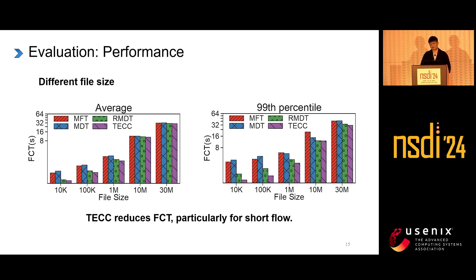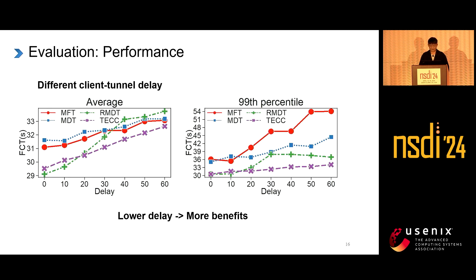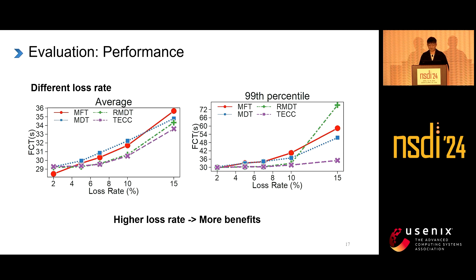With a 2% packet loss rate between client and tunnel server and files of different sizes, results show that TCC can effectively reduce file transfer time, especially for short flows — about 90% optimization for 10 KB and 100 KB. When varying the delay, results show the lower the delay, the more benefit is gained, though there is still good benefit at a delay of 50 ms. With varying loss rates, the higher the packet loss rate, the better the performance improvement, especially at the 90th percentile.